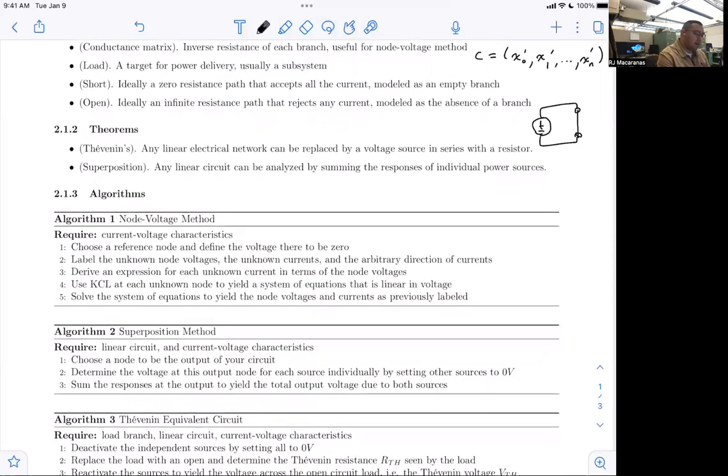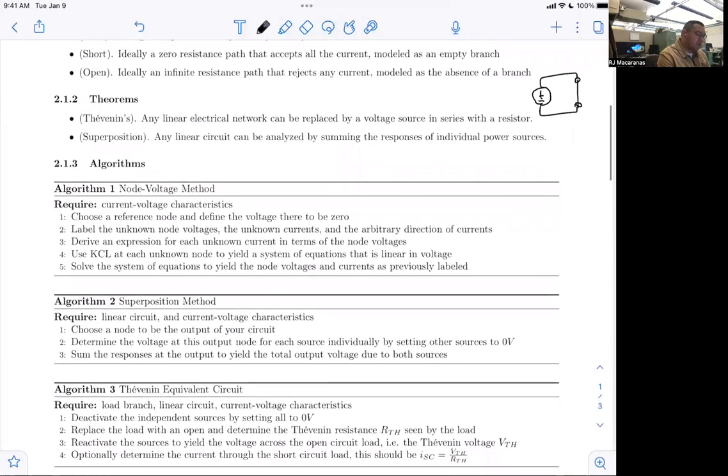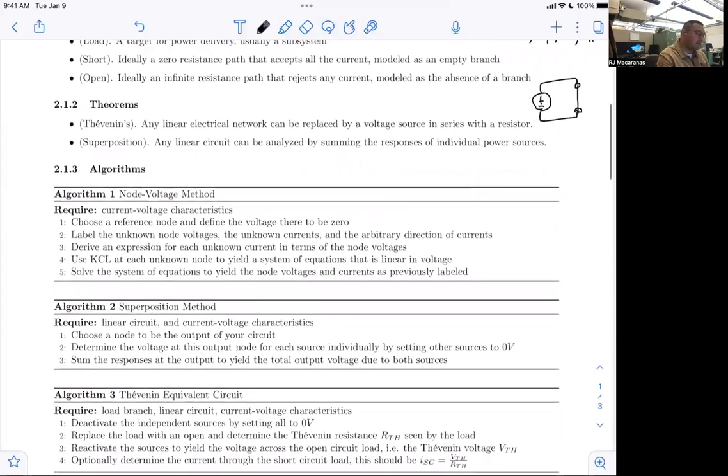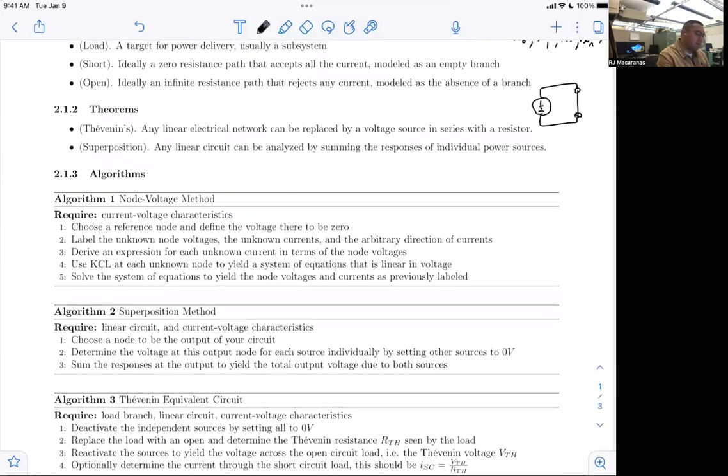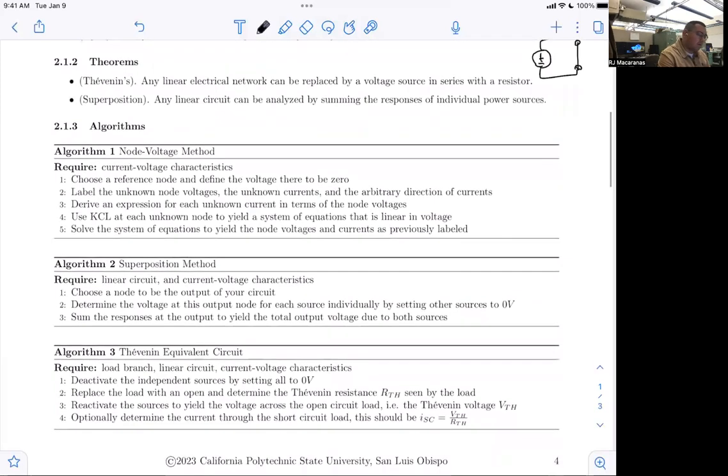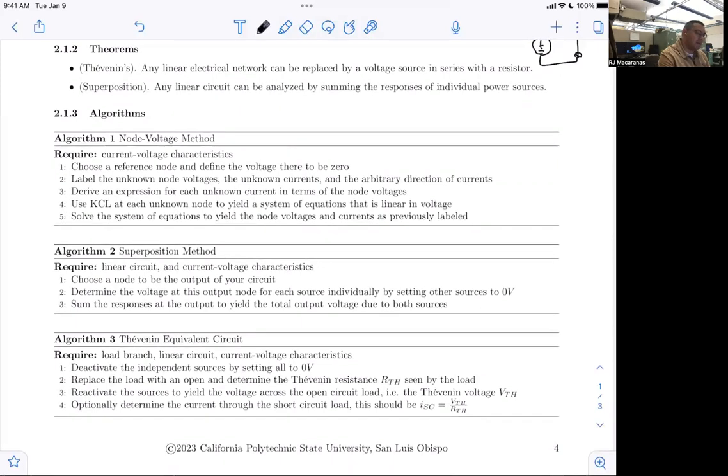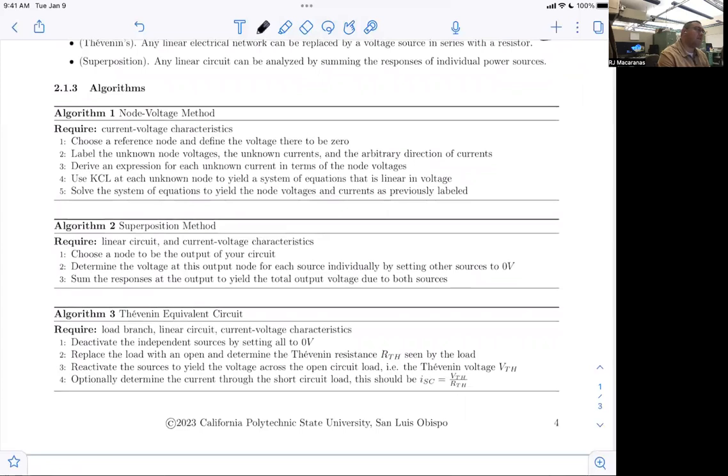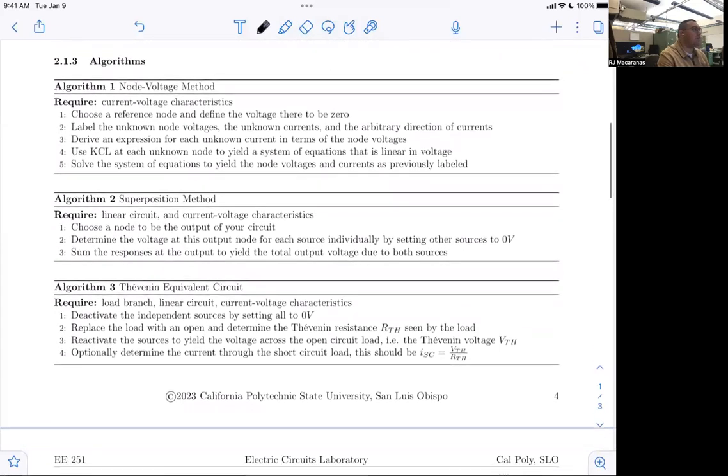And here's just a discussion on Thevenin. So Thevenin says that we can take any linear electrical network, any kind of mess of sources and resistors, and we can condense that into just a voltage source and a resistor, right? So some Thevenin voltage and Thevenin resistance. And the superposition theorem says that any circuit can be analyzed by sum of the responses of individual power sources. And we'll get into that a little bit with the example here. So here are just the algorithms for the three different methods that we have. Thevenin equivalent circuit, I wasn't really sure how to write that as a method. It's more of just a way of simplifying a circuit. I haven't found any sources that say it's a particular method, but node voltage method and superposition method, you can find those in the literature, so I included their names like that.